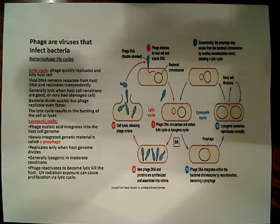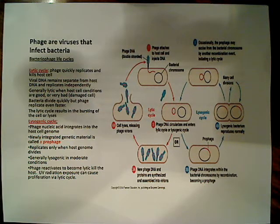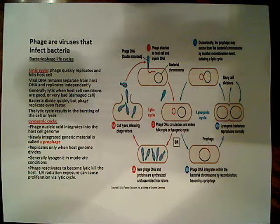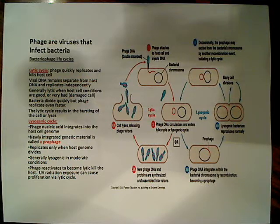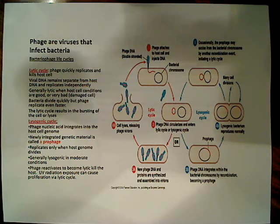The lytic cycle is used when the host cell conditions are good. If the conditions are very bad — if the cell becomes damaged or can no longer survive — we also see the lytic cycle as the dominant form. Bacteria divide quickly by binary fission, but phage replicate even faster. The ultimate result of this whole process is the death of the cell, the bursting and cell lysis, which releases more virions to infect other bacterial cells.